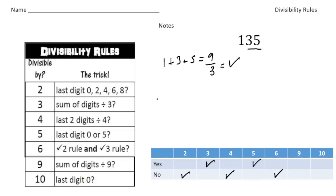The rule for 9, again, same as 3. We're going to add up the digits. But the numbers have to be, the sum has to be divisible by 9. And 1 plus 3 plus 5 is 9. And of course, 9 divided by 9 is 1. So that works. And finally, for 10, it has to end in a 0. And in this case, it does not, it's in a 5. So that would be a no.